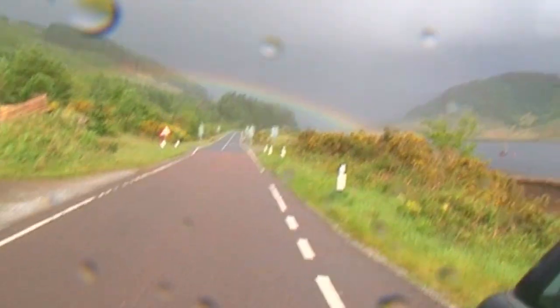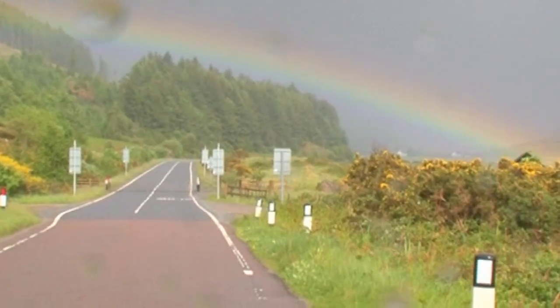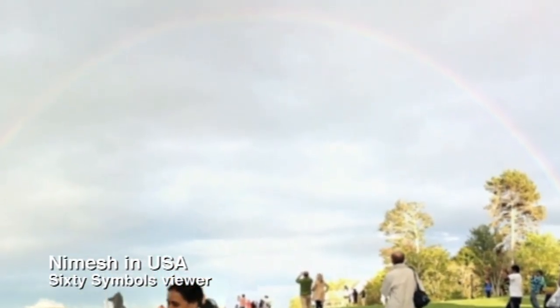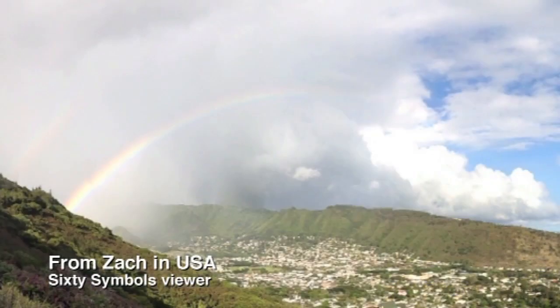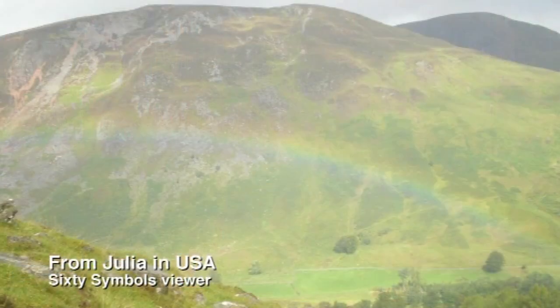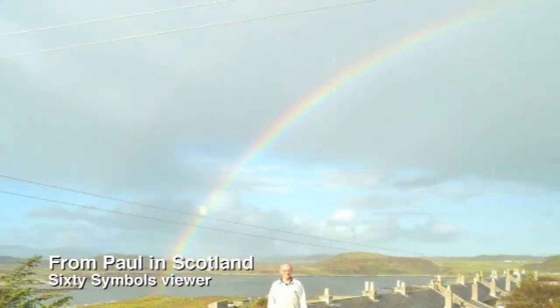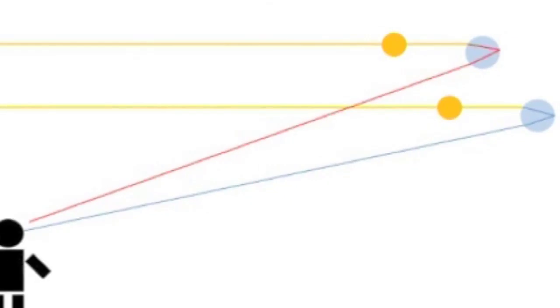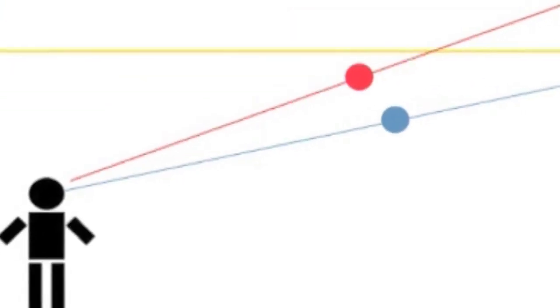If you have to be at this magic 42 degree angle, how come I can see a rainbow and Johnny Smith five miles away can see a rainbow? Because he's looking at a different set of raindrops. So he's still looking 42 degrees away from the sun but from where he's standing he sees a completely different set of raindrops that are all doing exactly the same thing back towards you. So when I see a rainbow at my house and you see a rainbow over at your house, we're actually seeing two different rainbows. You're seeing a different set of raindrops that are causing the effect.